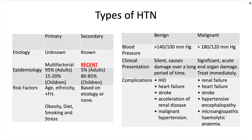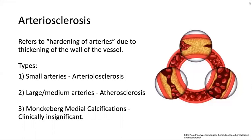This increased pressure may cause or accelerate arteriosclerosis — the hardening of arteries due to thickening of the vessel wall. This thickening causes the lumen to narrow, leading to reduced blood supply. We have three types: arteriosclerosis in small arteries, atherosclerosis in large or medium arteries, and Mönckeberg's medial calcification, which is clinically insignificant as it causes calcified lesions in the media that do not obstruct blood flow.